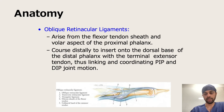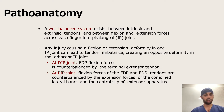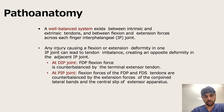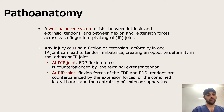Now, what exactly is the patho-anatomy in deformities formed after an injury or trauma? There is a well-balanced system which exists between the intrinsic and extrinsic tendons, and between the flexion and extension forces across each of the interphalangeal joints. Any injury causing a flexion or extension deformity in one interphalangeal joint can lead to tendon imbalance, and thus would lead to an opposite type of deformity in the adjacent joint — so if one is going into flexion, the other would go into extension, and vice versa.